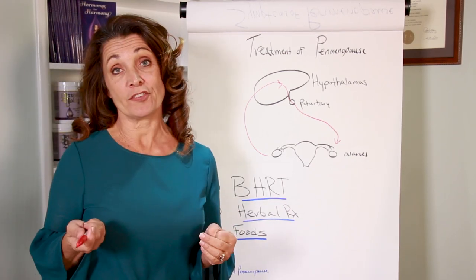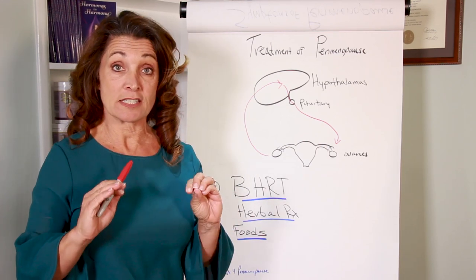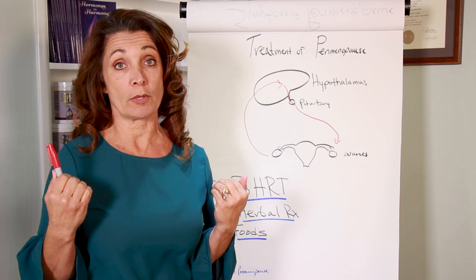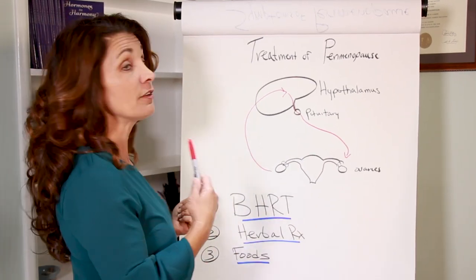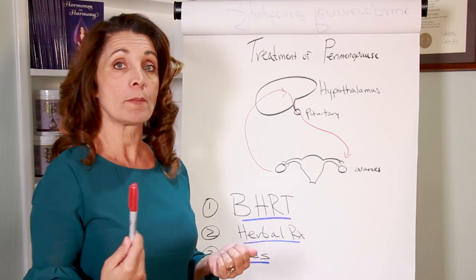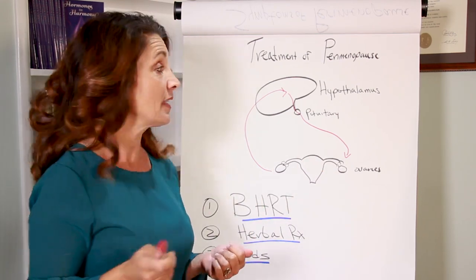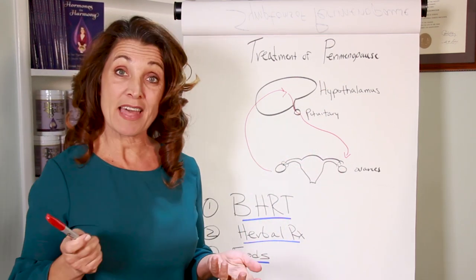So the first thing you need to understand is that perimenopause is a condition of lower hormone levels, particularly estrogen and progesterone. And the treatments need to focus on not just raising up your hormone levels, but balancing your hypothalamic-pituitary-ovarian axis. What does that mean?